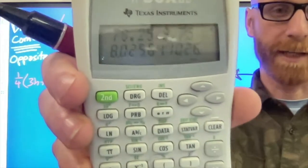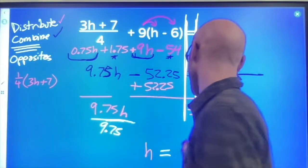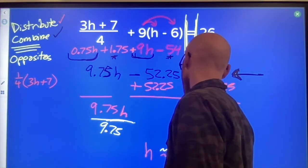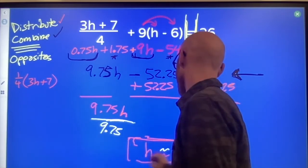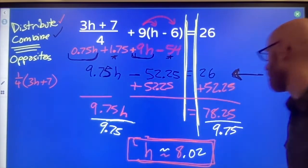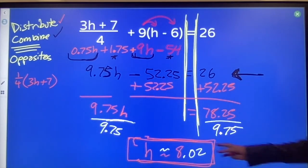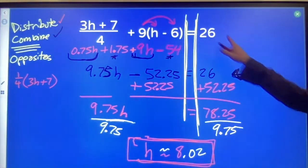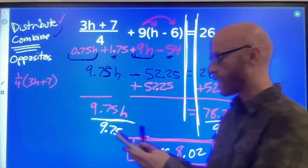A nice, long, weird number like this, but it's approximately 8.02. So I'm going to put my squiggly equal signs. If I wanted to check and see am I correct, make sure I didn't make any mistakes, I'm going to put an 8 in for h and I should get close to not exactly 26 because this is not exactly 8, but if I type this whole line in there.